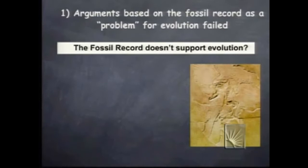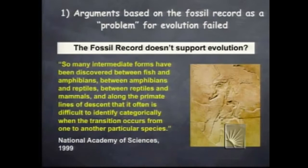You might hear people say that the fossil record doesn't support evolution. Well, the National Academy of Sciences, only a few years ago, basically said there are so many intermediate forms between all these species that it's often difficult to identify categorically where the transition occurs from one species to another. In other words, there are so many transitional forms, we actually argue about this.